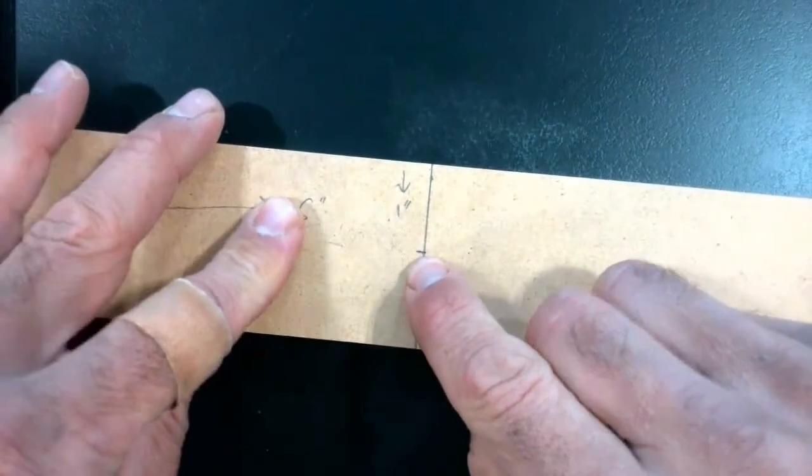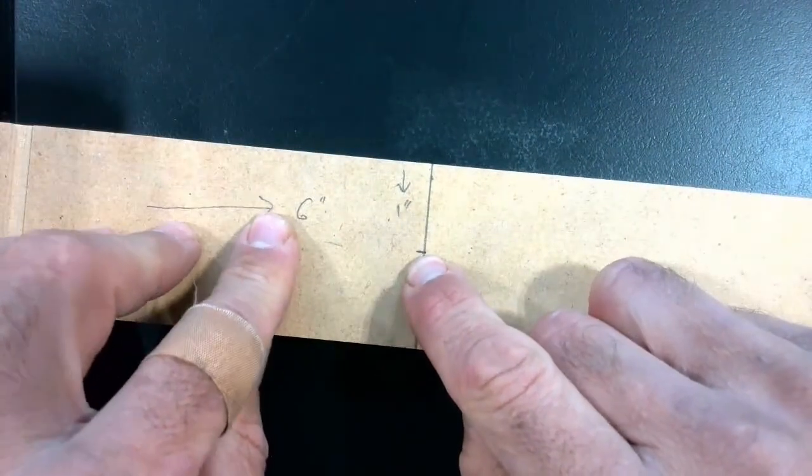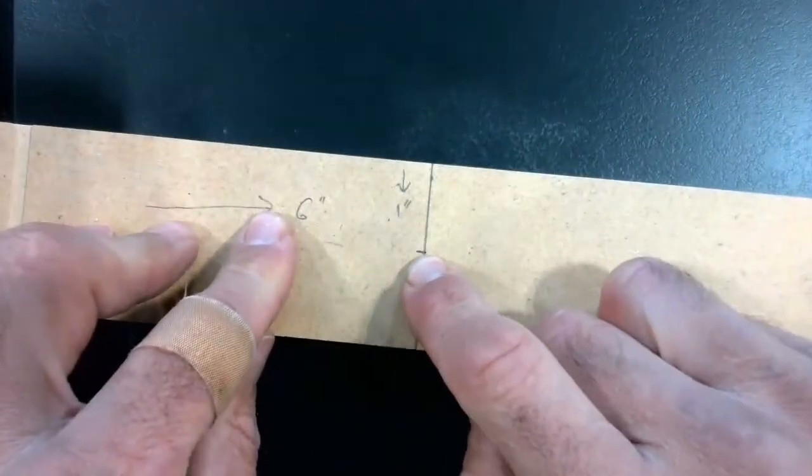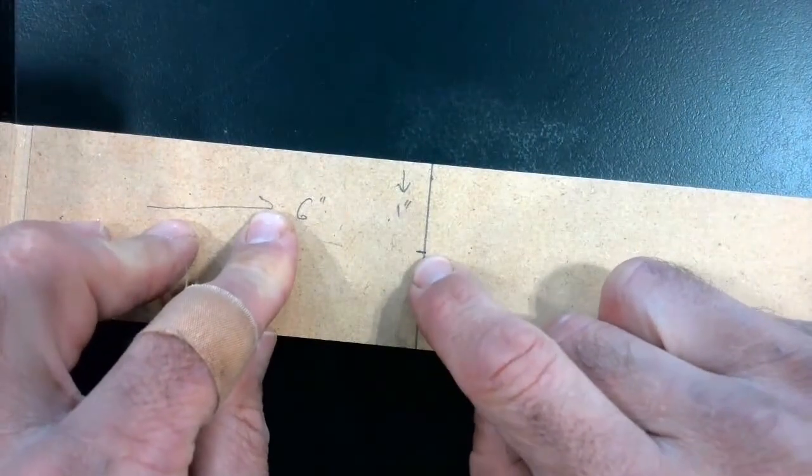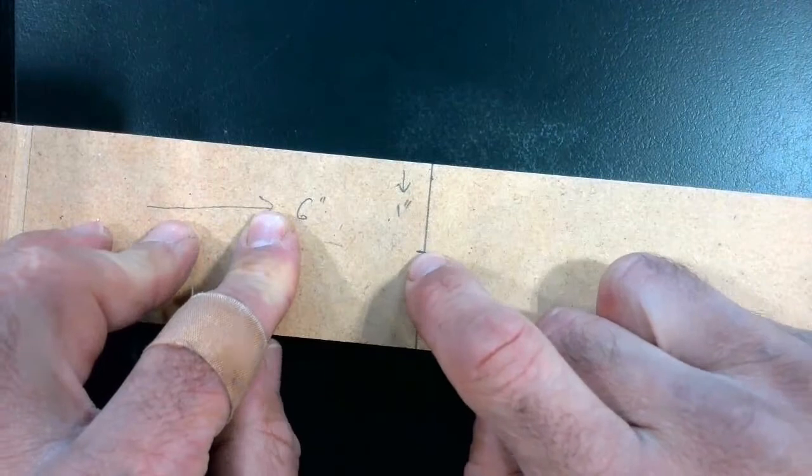And what I have done is I've put a small indentation right here at the intersection of my two lines that will help me line up my drill bit for an accurate drilling operation.